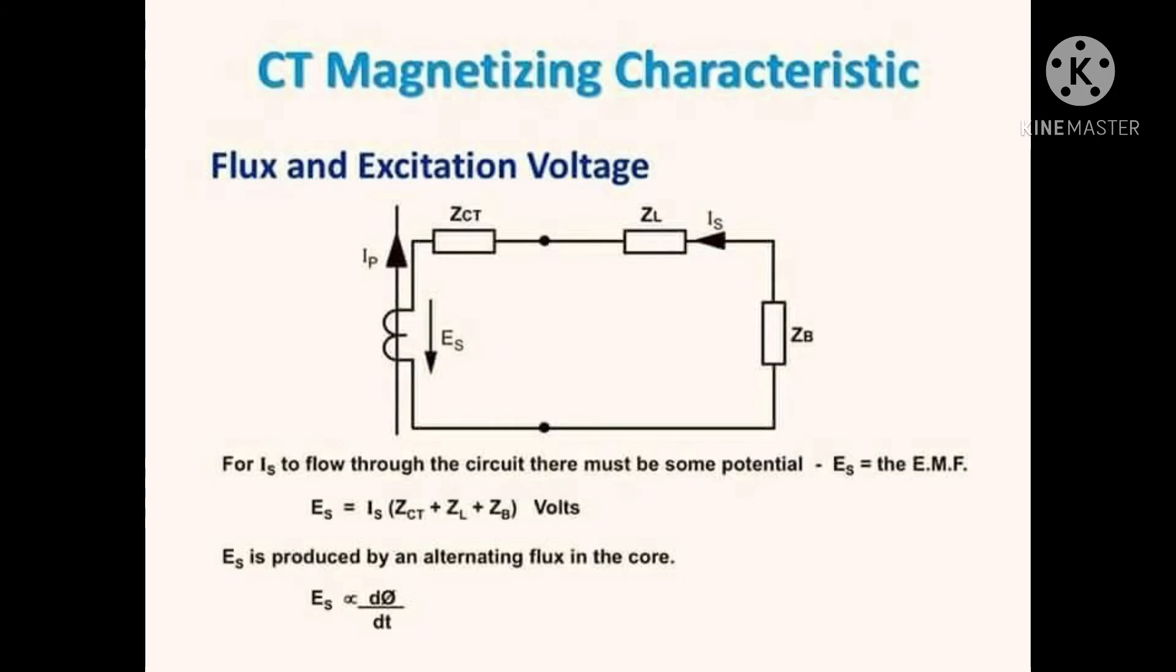The H curve below shows the non-linear relationship between excitation current and magnetizing flux. After a certain value of excitation current, flux will not further increase so rapidly with increase in excitation current.